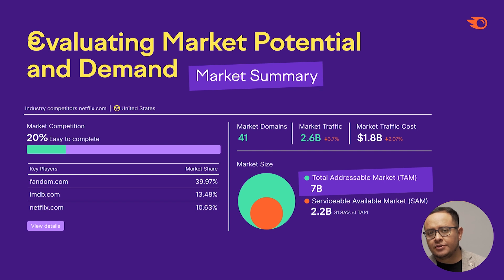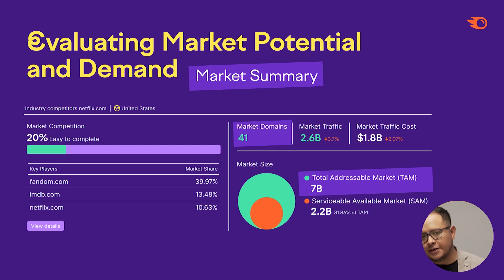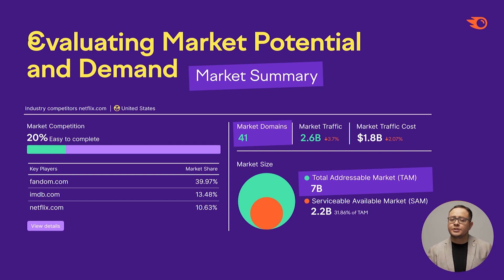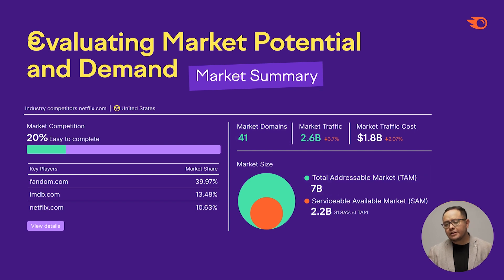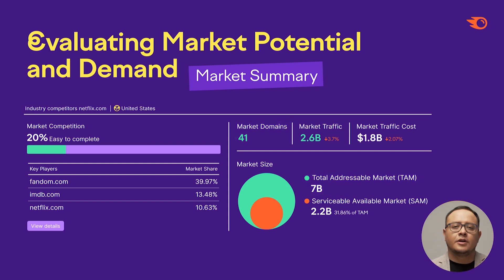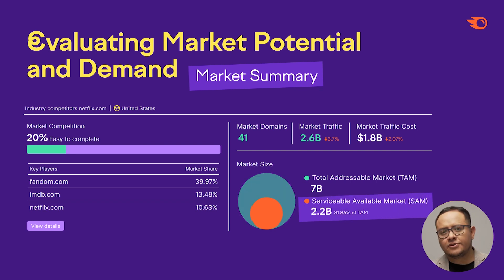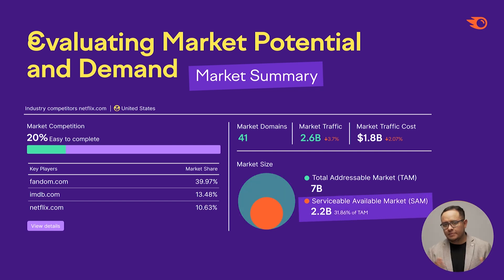SEMrush.trends measures this based on traffic stats from 41 relevant market players. This is the number of all users who use streaming services, including those who do not use Netflix itself. The small circle — SAM — is the audience that might be interested in visiting the Netflix.com domain in particular.